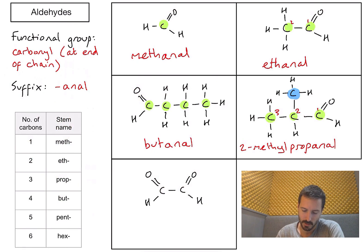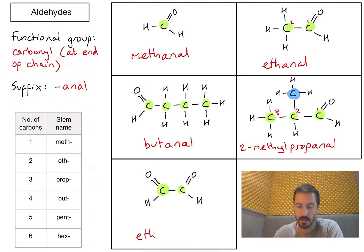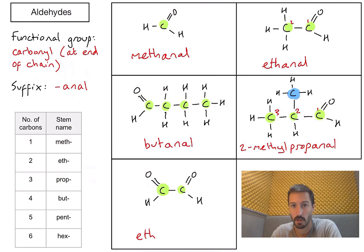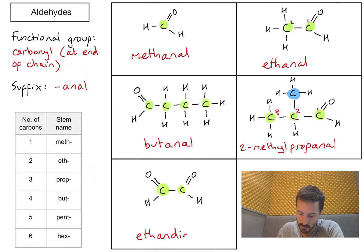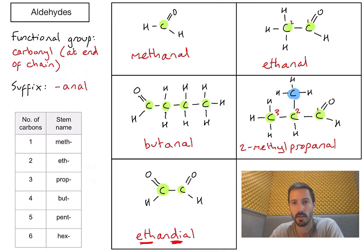Final example, a little more complicated: there are two carbonyl functional groups, both on either end of the carbon chain, so we're still talking about an aldehyde. Counting the carbons — two — which relates to the stem 'eth'. Normally with one group we'd have ethanal, but because there are two carbonyl groups, we indicate that with 'di-', giving ethanedial. We don't need to write ethan-1,2-dial because they can only be at the ends of the chain — if there are two carbons, there must be one carbonyl on each.